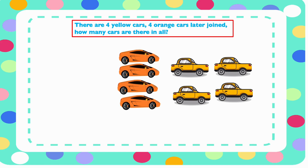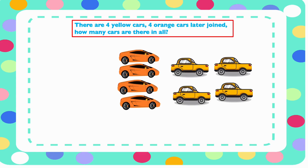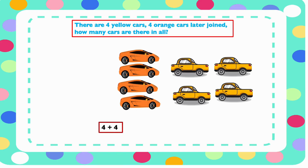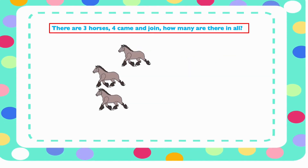There are four yellow cars and four orange cars. They joined. How many cars are there in all? To find out we need to count them together. So let's do that: one, two, three, four, five, six, seven, eight.